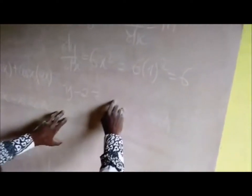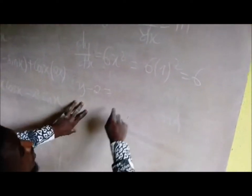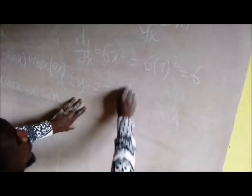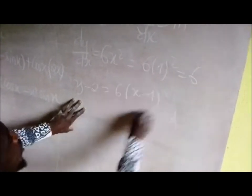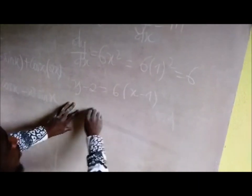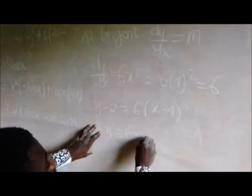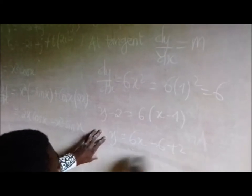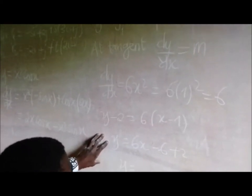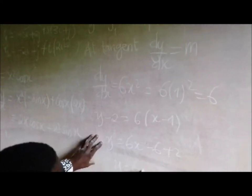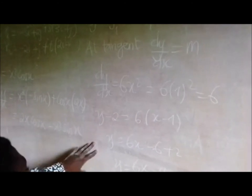And then we have now the equation of the tangent going to give us 6, and we have x minus 1. So therefore, if we put the form y equals mx plus c, we have 6x minus 6 plus 2, so that y equals 6x minus 4.